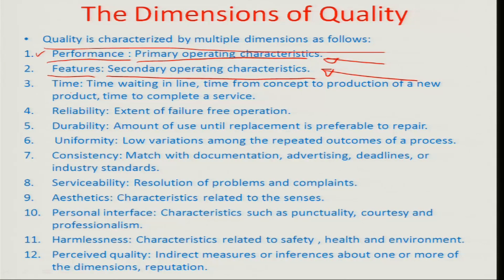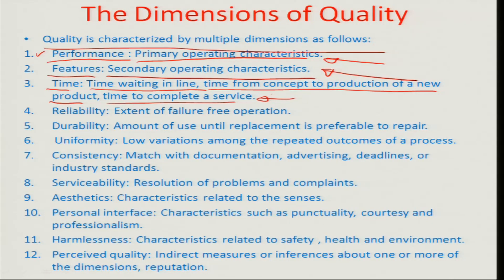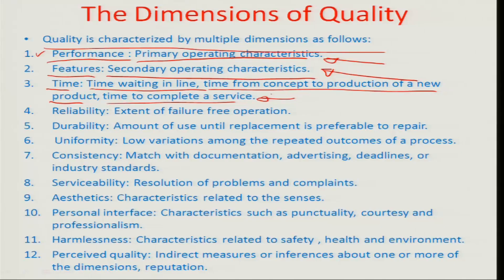The next dimension is time — waiting time, time from concept to production of a new product, or time to complete a service. This includes the lead time from the design concept all the way to the production stage, or in a service industry, the time to complete a given service. For example, in a restaurant, the time from the ordering point to when food is delivered is very critical because the customer may have to wait more or less depending on whether the food arrives faster or later. That is a very important aspect of quality.